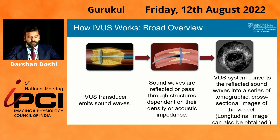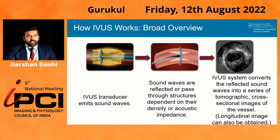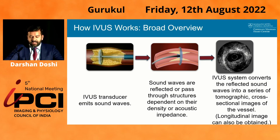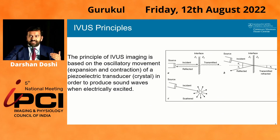On a broad level, how does IVUS work? There is a transducer that creates sound waves. Those sound waves are either reflected or they pass through structures depending on their acoustic impedance. Whatever bounces back is usually bright; whatever goes through and doesn't bounce back is usually darker. The IVUS system then converts those reflected sound waves into a series of tomographic cross-sectional images, which can tell you the makeup of the vessel architecture.